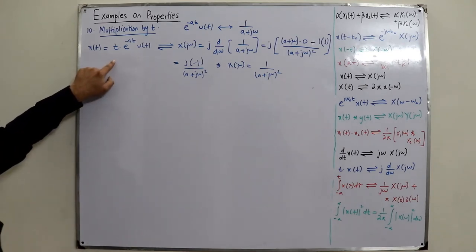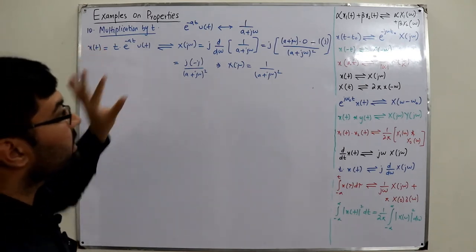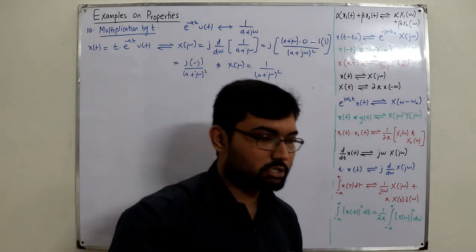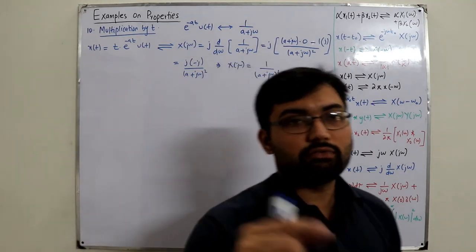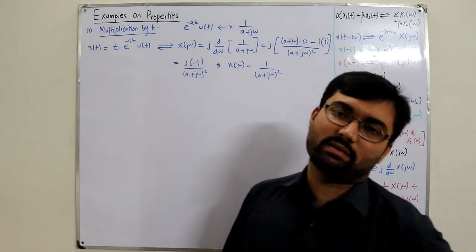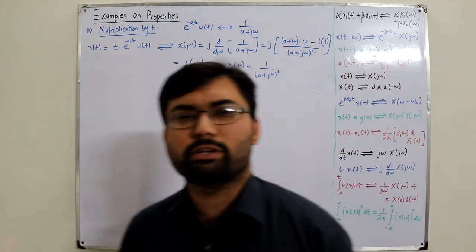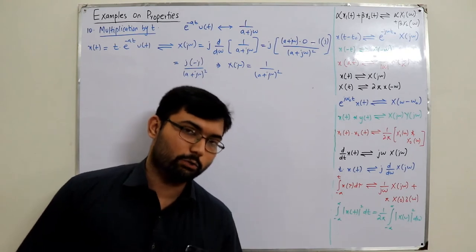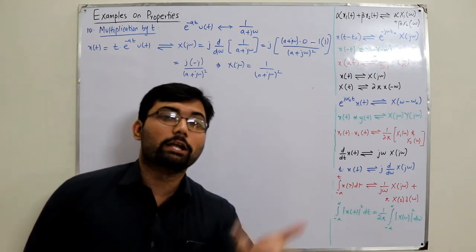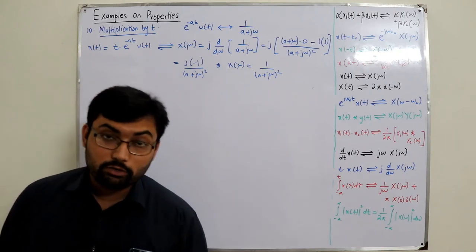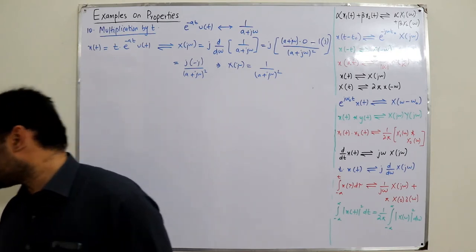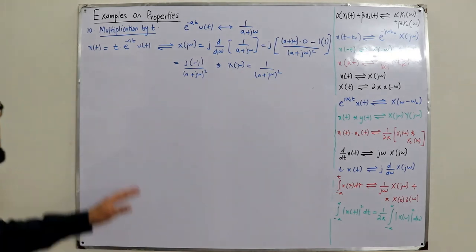You can verify this using the direct Fourier transform formula: X(jω) = ∫₋∞^∞ x(t)e^(-jωt)dt. Substituting x(t) = t·e^(-at)u(t) gives the same result. Try it yourself and let me know in the comments.